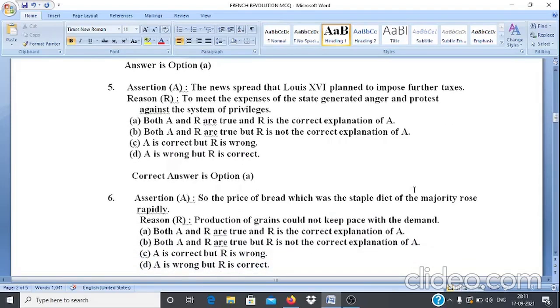Question 5. Assertion A: The news spread that Louis XVI planned to impose further taxes. Reason R: To meet the expenses of the state generated anger and protest among the system of privileges. Here assertion A and reason R both are correct and reason is the correct explanation of A. That is why correct answer is option A.